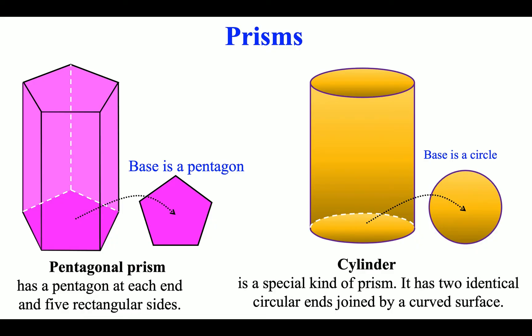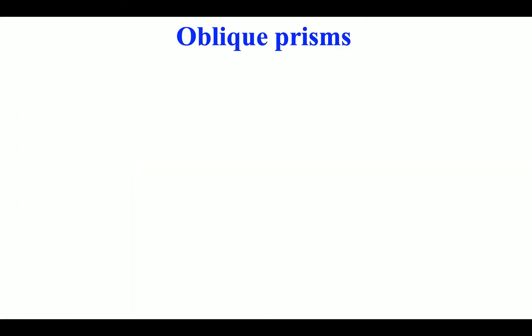Cylinder is a special kind of prism. It has two identical circular ends, joined by a curved surface. Oblique prisms.